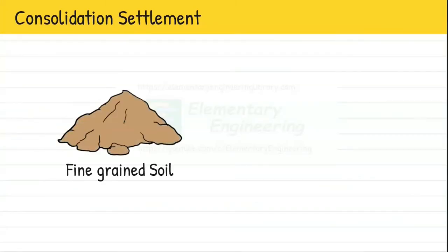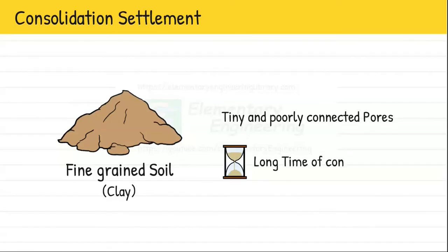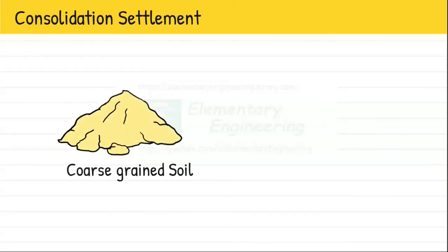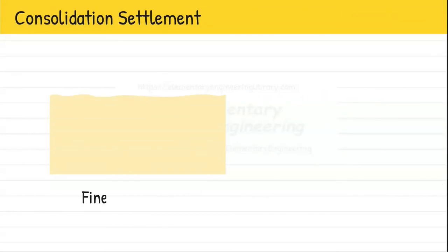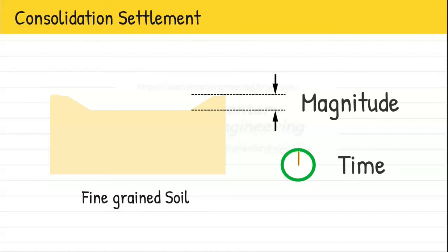Consolidation settlement is more prominent in fine-grained soils like clay because water experiences difficulty flowing through their tiny, poorly connected pores, resulting in very long time of consolidation. Conversely, coarse-grained soils like sand or gravel consolidate quickly because of their high permeability that allows water to escape easily. Therefore, we study consolidation process primarily in fine-grained soils, as both magnitude and time of settlement is significant in them.